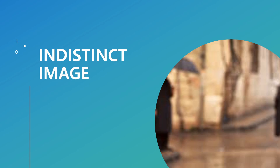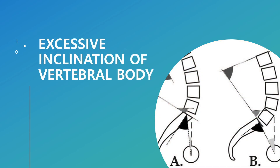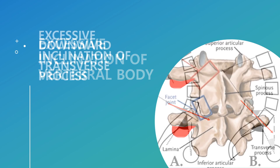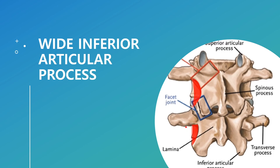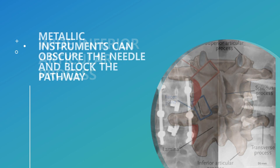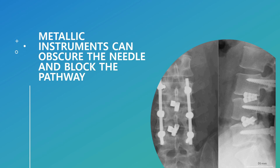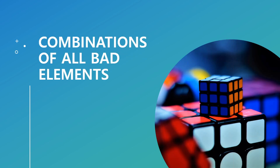Causes of a faint and indistinct image include osteoporosis, sclerotic vertebral body, instrument and bone cement implantation, and sometimes poor quality of the image intensifying tube. Excessive inclination of the vertebral body on the sagittal plane — usually flexion in the lower lumbar and extension in the upper lumbar area. Downward inclination of the transverse process with an indistinct inferior border on the coronal plane. Excessive outer proliferation of the inferior articular process and facet joint on the coronal plane. The metallic instrument can block the needle pathway due to its high radio density. The most challenging type is when all these bad anomalies are combined.